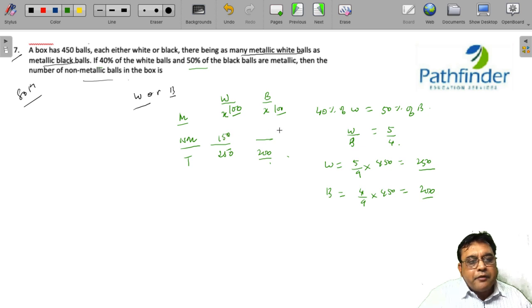The number of non-metallic black balls is 200 minus 100, which equals 100. The question asks for the total number of non-metallic balls, so this is 150 plus 100, which equals 250. This should not take you more than one minute.